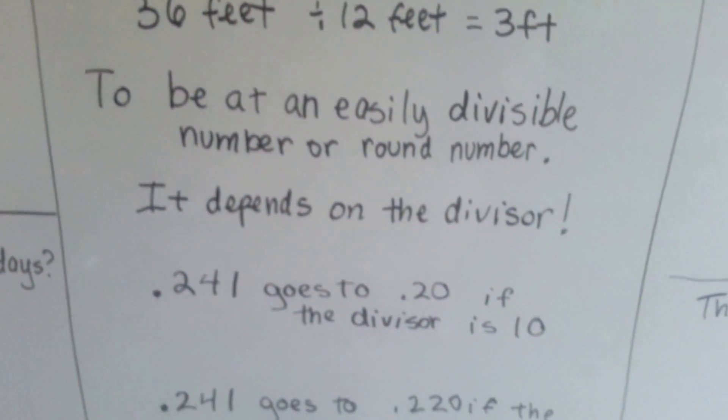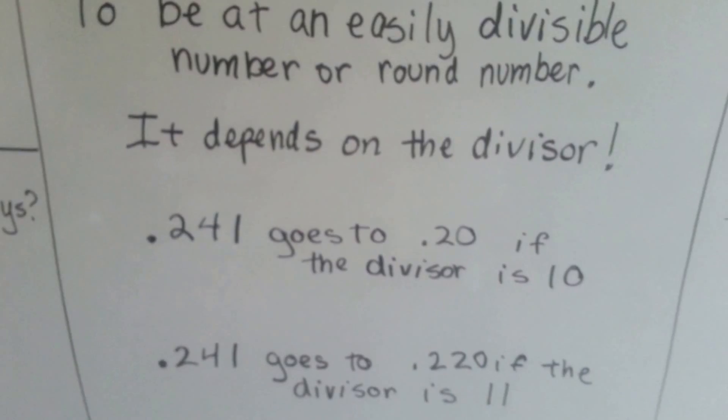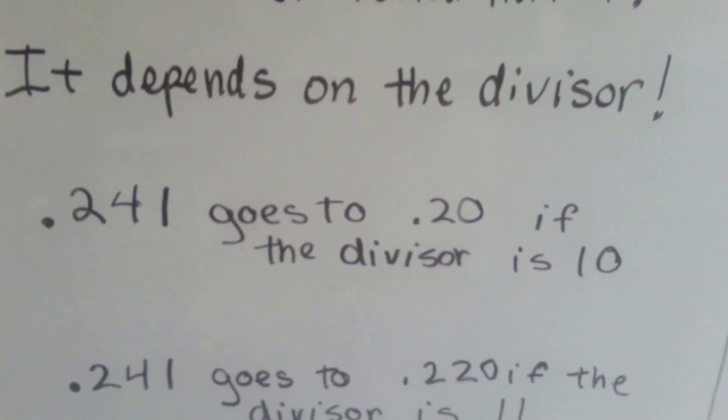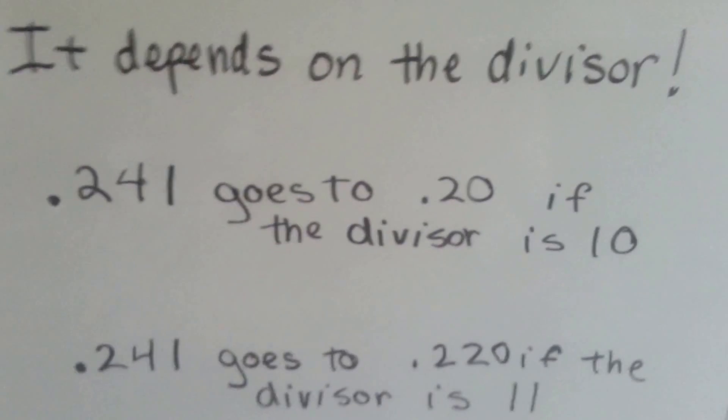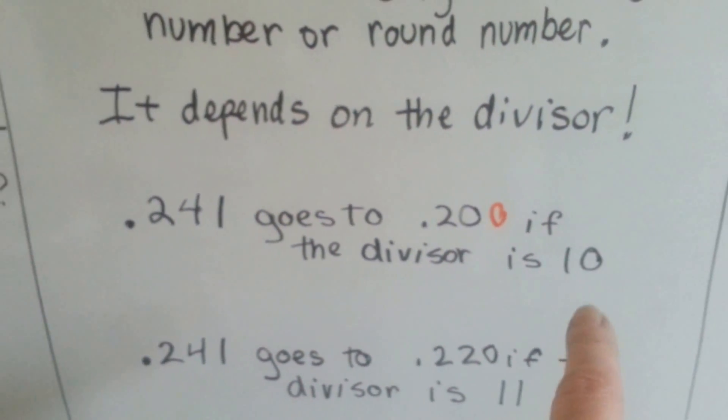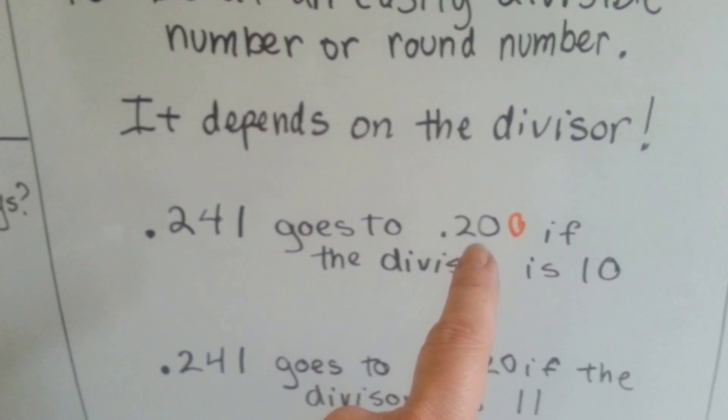It depends on the divisor. If our dividend was 241 thousandths, you could go to 200 thousandths. This should say 200 thousandths. If the divisor is 10, that would be more compatible. See?